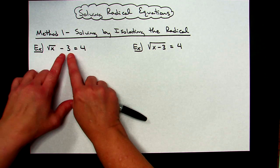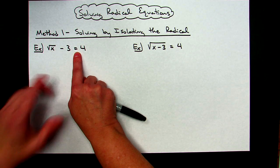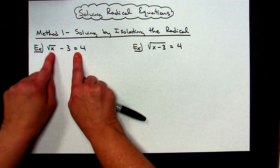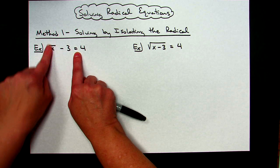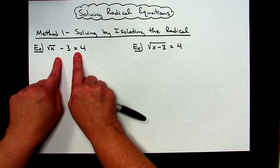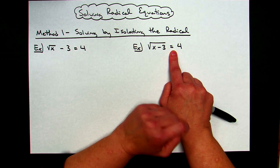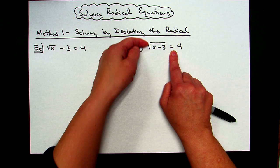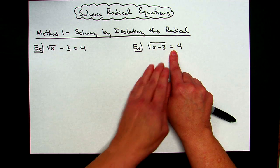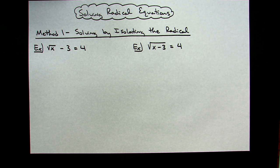In this first example, looking at the equal sign as the center of the equation, over here on the left, the radical is not isolated because it has an extra minus three sitting on the same side. Whereas in this example over here, on the left-hand side, the radical is already isolated because there is nothing being multiplied to it and nothing added or subtracted outside the radical, so this one's already isolated.